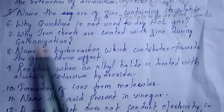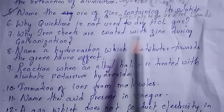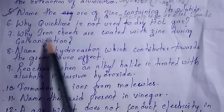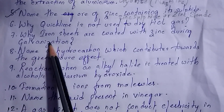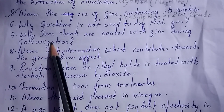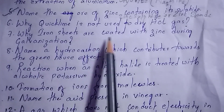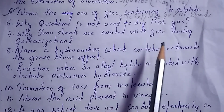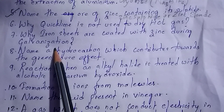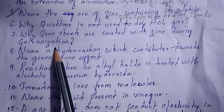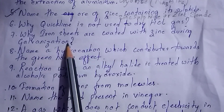Next question: why are iron sheets coated with zinc during galvanization? Iron sheets are coated with zinc during galvanization in order to prevent rusting of the iron sheets.